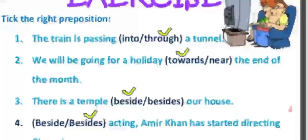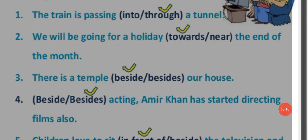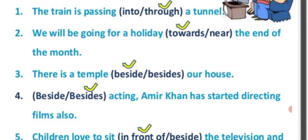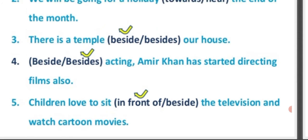Sentence 3: There is a temple ___ our house — options are 'beside' or 'besides' — 'beside' (B-E-S-I-D-E) is a preposition, so the answer is 'beside'. Sentence 4: Besides acting, Aamir Khan has started directing films also — 'besides' means in addition to. Sentence 5: Children love to sit in front of the television and watch cartoon movies.